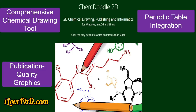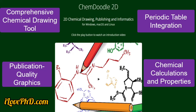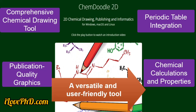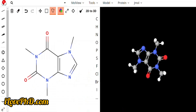ChemDoodle allows users to generate high-resolution, publication-quality figures with customizable fonts, bond thickness, and colors suitable for journal publication. Users can also calculate basic chemical properties like molecular weight, molecular formula, and elemental composition directly from the drawn structure. ChemDoodle is a versatile and user-friendly tool with comprehensive features for both novice and professional chemists.